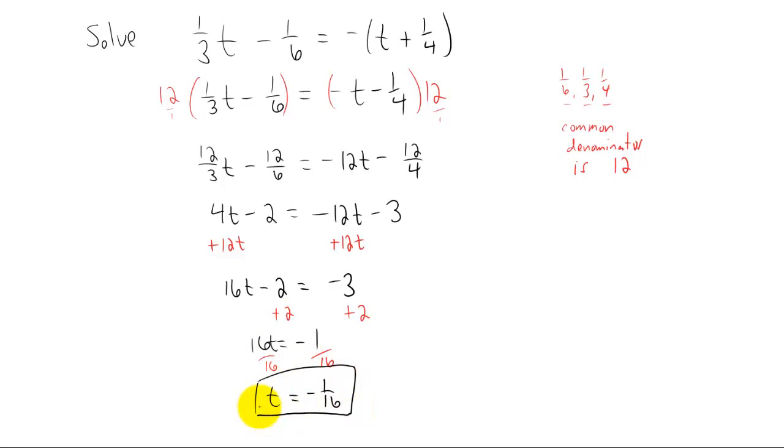And I'm getting t is negative 1 over 16. Again, that's going to be pretty tough to check by hand. It's possible to do it. If you happen to have a calculator and you're doing this as homework, go ahead and check it on your calculator, or do whatever your instructor asks you to do. Just a little bit of vocabulary. We found that the common denominator of all of our fractions in this problem was 12. So we multiplied by that 12 to do what we call clearing the fractions.